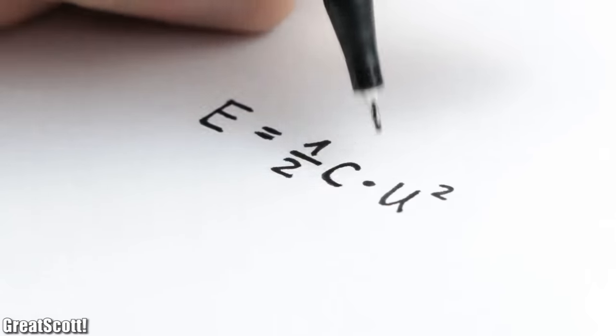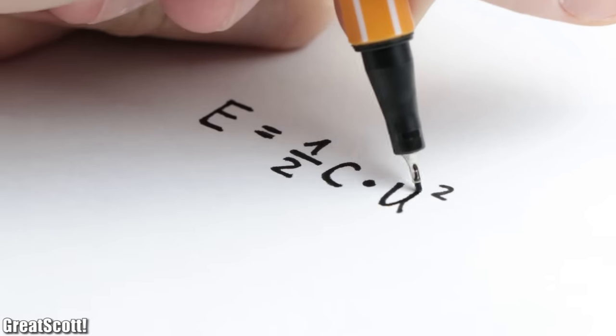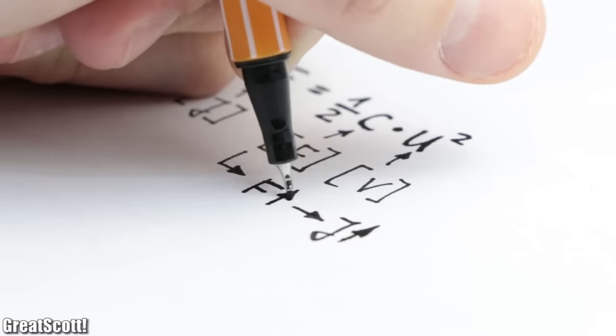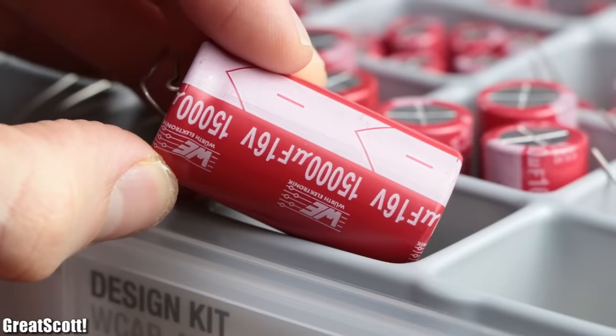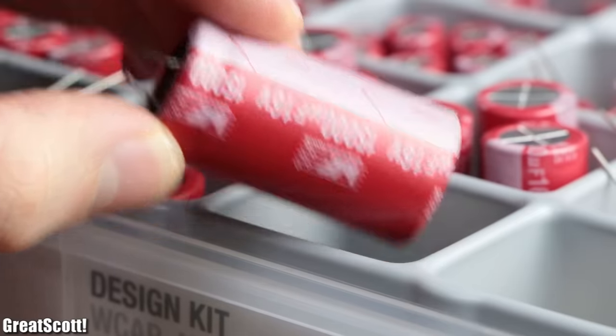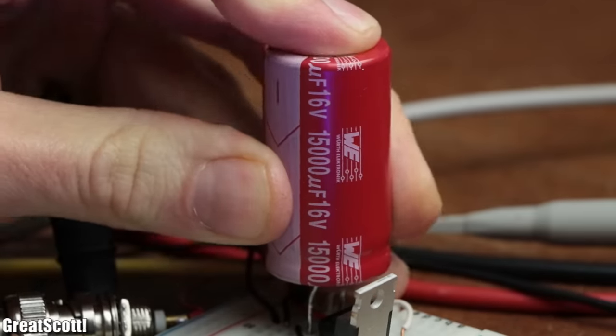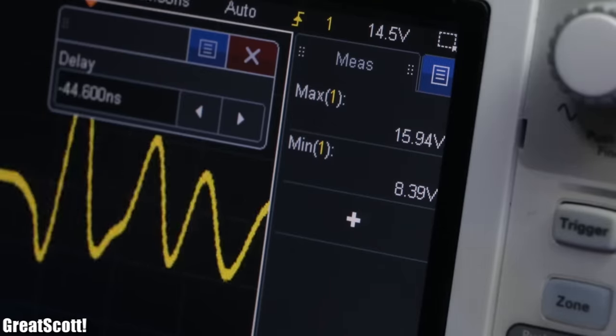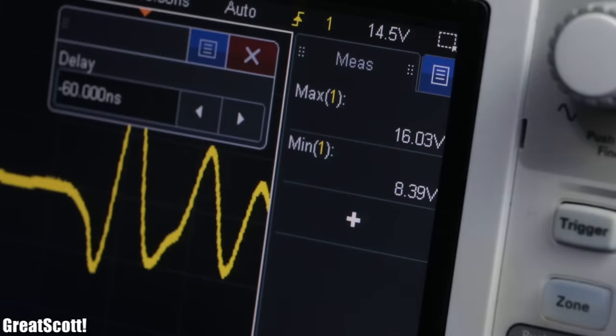I mean, since the capacitance rating is proportional to the stored energy of a capacitor, we should definitely be able to provide enough current with it. So I connected the 15,000 µF electrolytic capacitor in parallel to the IC and observed that the oscillation peaks decreased to 16 and 8 volts. Seems decent.